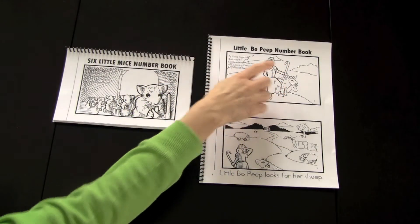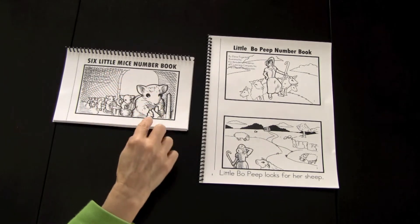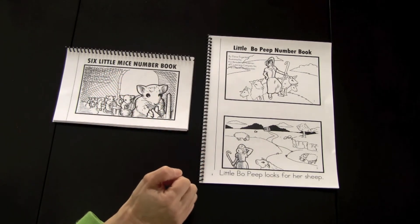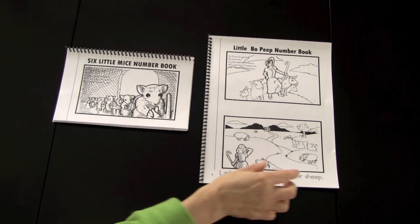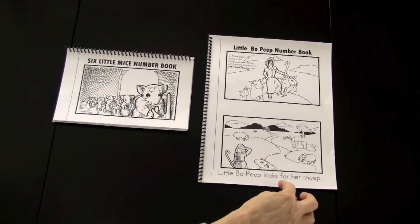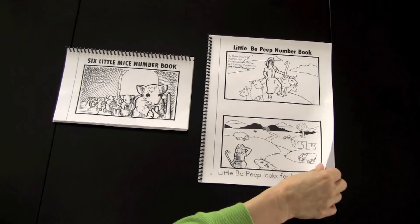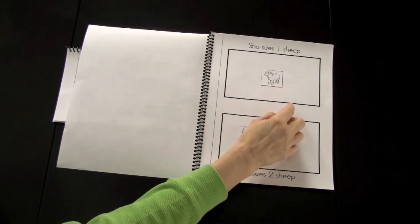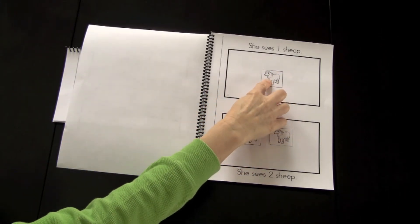The Emergent Readers Little Bo Peep Number Book and Six Little Mice Number Book both introduce the concept of addition. I'm going to demonstrate this to you. Little Bo Peep looks for her sheep. She sees one sheep. The children would cut and paste the correct amount.